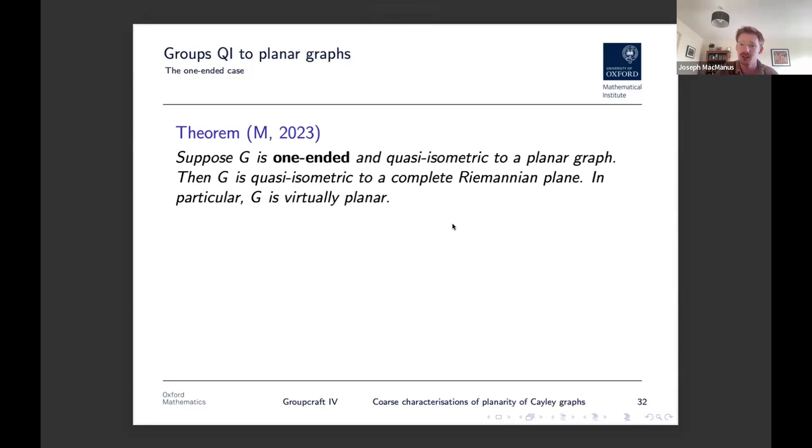What do we know? What can we say? And so the first result that I want to advertise is the following. So suppose G is one-ended and quasi-isometric to a planar graph, then it turns out that you can upgrade that planar graph to be itself a complete Riemannian plane. And in particular, by the previous results, it turns out that our group is virtually planar, which is nice. So why is this interesting? Well, some one-ended planar graphs are not QI to planes. So, for example, here is a planar graph. You can kind of imagine it as a half plane with lots of holes taken out of it. This is not QI to a plane. It's not coarsely simply connected or whatever you want to say, but it's not QI to a plane. This is a problem.